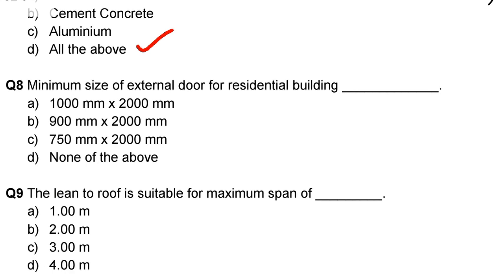Next question: minimum size of external door for residential building. Option A: 1000 mm × 2000 mm, Option B: 900 mm × 2000 mm, Option C: 750 mm × 2000 mm, Option D: none of the above.